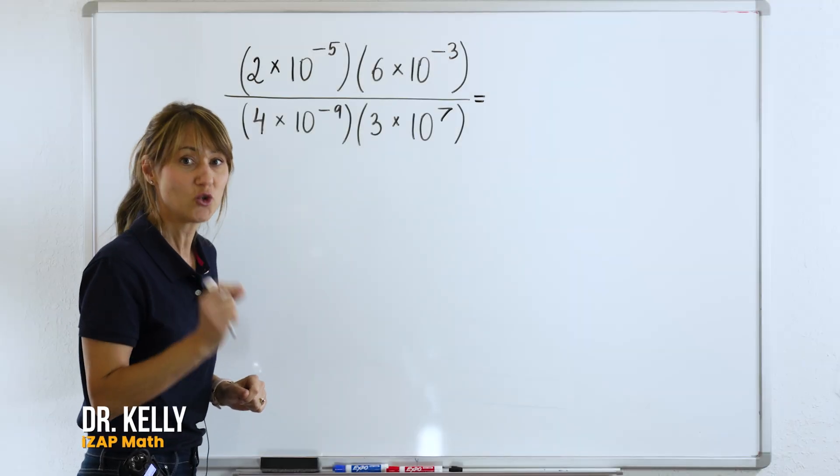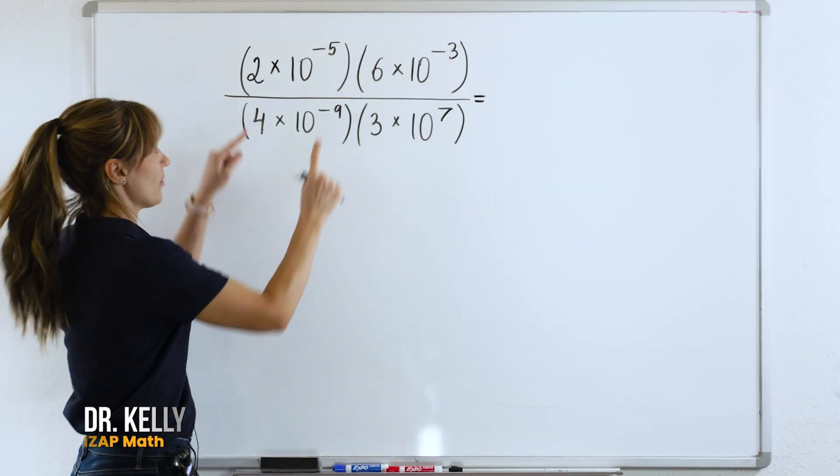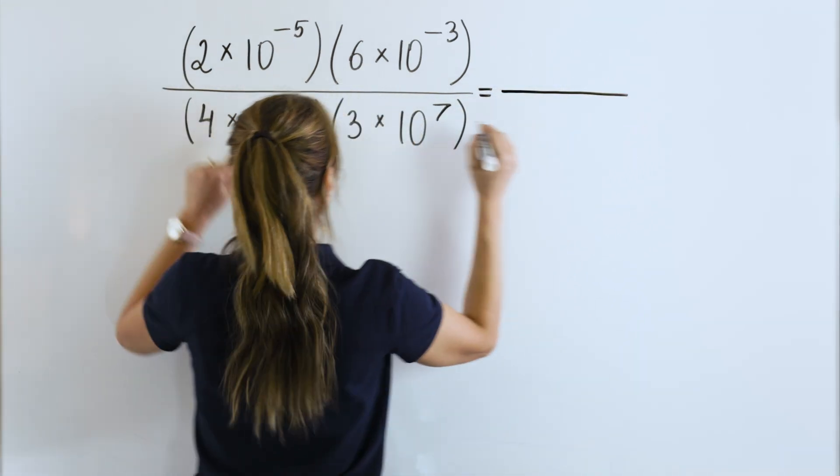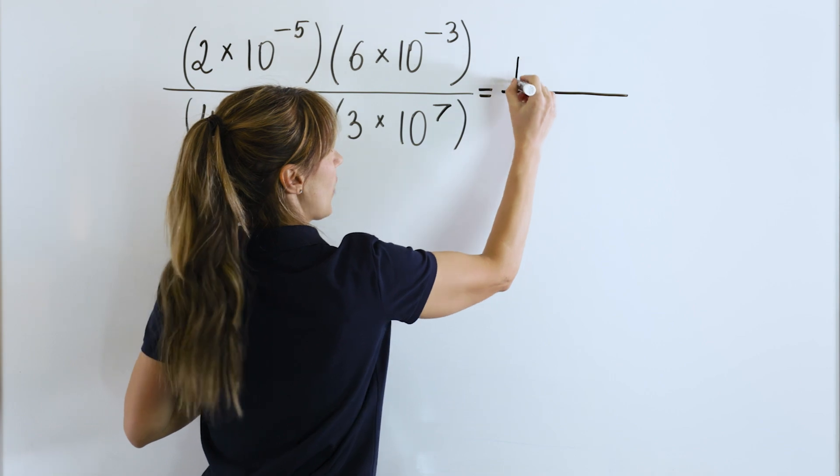First, we will simplify the numerator. Let's multiply the numbers. 2 times 6, so we will work in the numerator and multiply 2 times 6. 2 times 6 is 12.